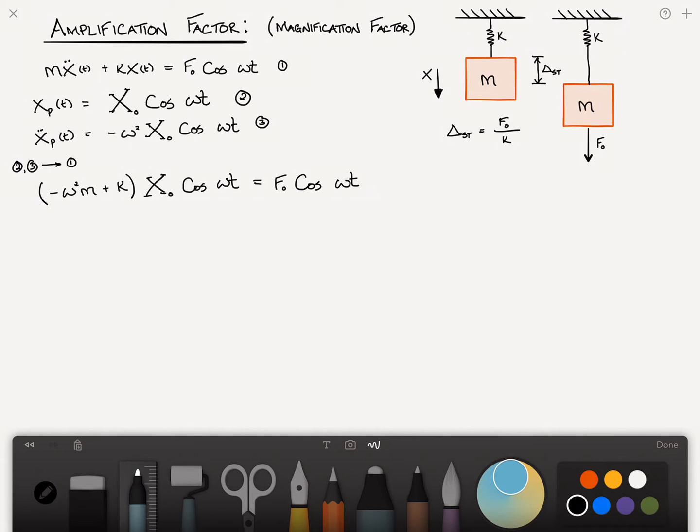Rearranging this, we can rewrite it as x sub zero divided by f sub zero, just taking the f sub zero from the right to the left and taking this term from the left to the right, we get 1 divided by k minus omega squared m. And the cosine omega t's cancel.